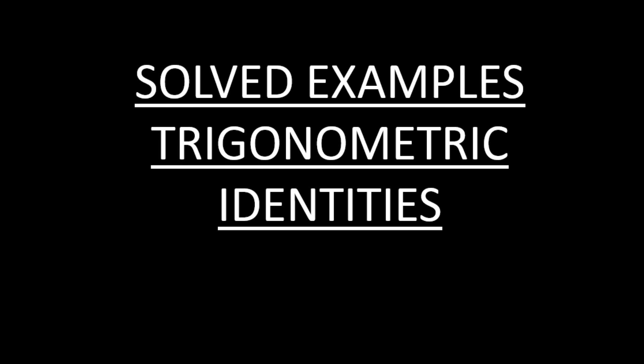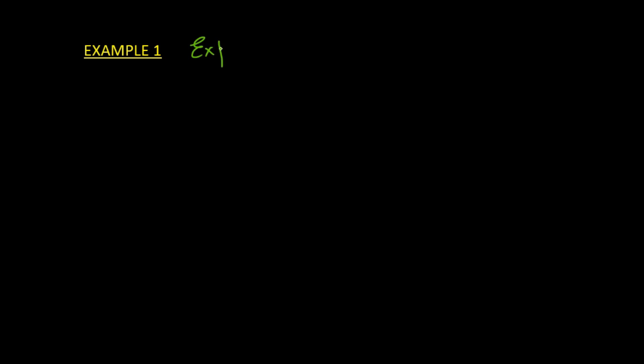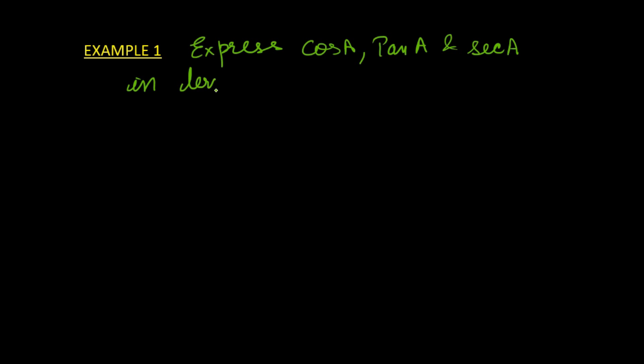Let's see some examples which use trigonometric identities. The first question: express cosine A, tangent A, and secant A in terms of sine A.